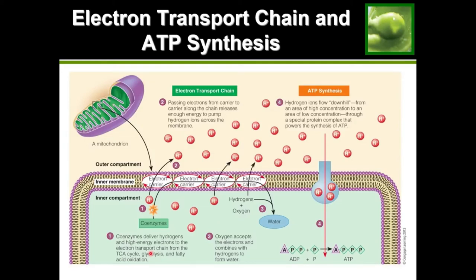To recap: the coenzymes deliver hydrogens and electrons to the electron transport chain, ending up in the inner compartment. We want them to reach the outer compartment so they can use the pump to make ATP. That requires energy, so the electrons move down the membrane using electron carriers, generating enough energy to move the hydrogens to the outer compartment where they come back down using the pump and generate ATP.